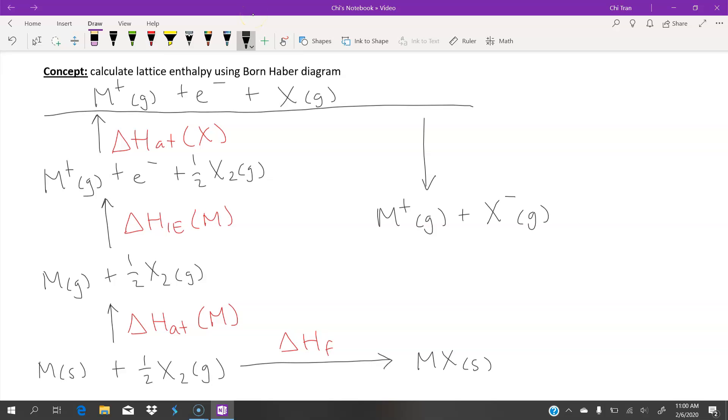Now we have the metal cation and the halogen anion, and that step is the enthalpy of electron affinity.